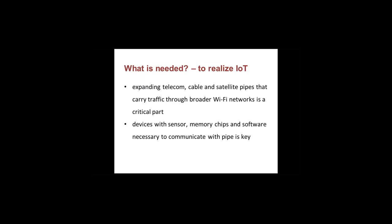What is also needed is expanding telecom infrastructure — there are areas in India and developing countries where there is no telephone network. Cables and satellite links that carry traffic through broader Wi-Fi networks are critical for extending the last-mile reach. Devices need sensors, memory, chips, and software necessary to communicate with IPv6. To make an IoT device, you need a device capable of having a sensor, enough memory to program it, and hardware space to store software.